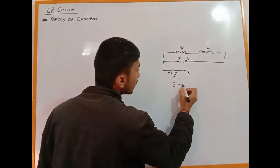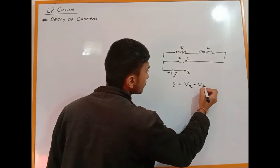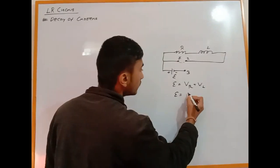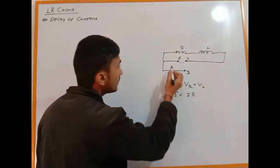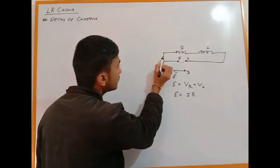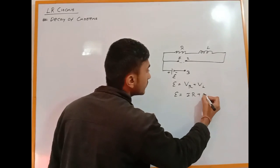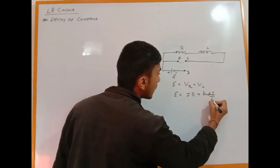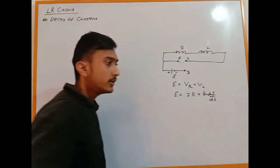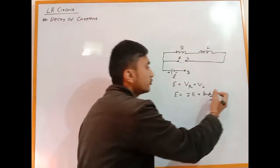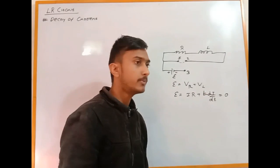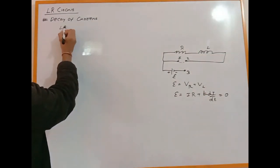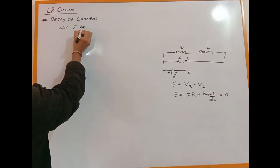So when 1-2 is connected, E is the potential difference across R plus potential difference across L. E equals I·R plus L(di/dt). Here in the decay case, the battery is removed from the equation. Let I be the current flowing in the circuit.